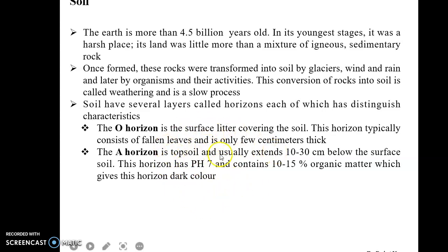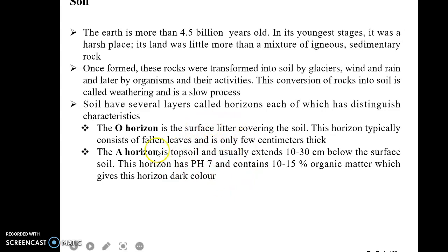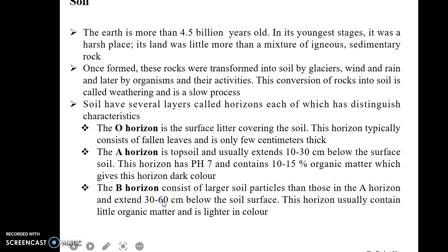Below the O horizon is the A horizon, also known as the topsoil, which extends 10 to 30 centimeters below the surface. This horizon has a pH of 7 and contains 10 to 15 percent organic matter, and because of this organic matter, this horizon has a dark color.